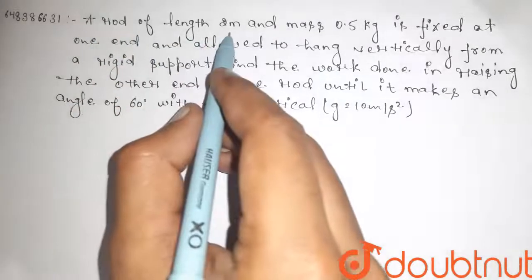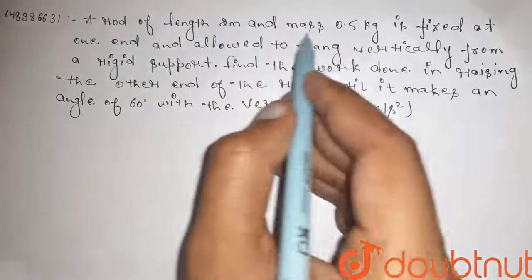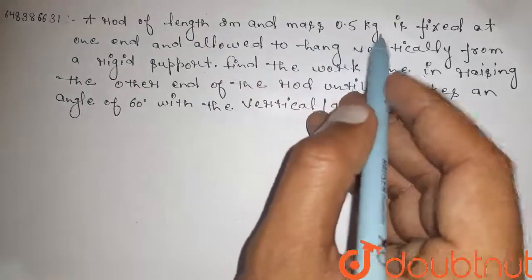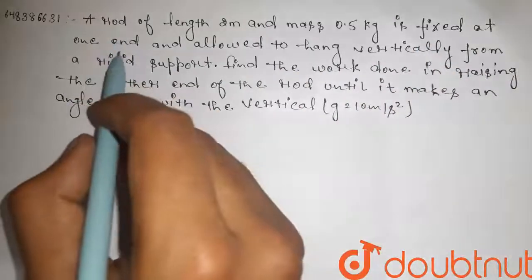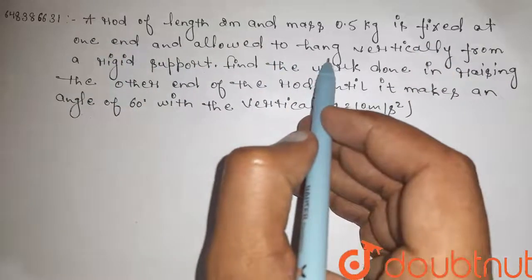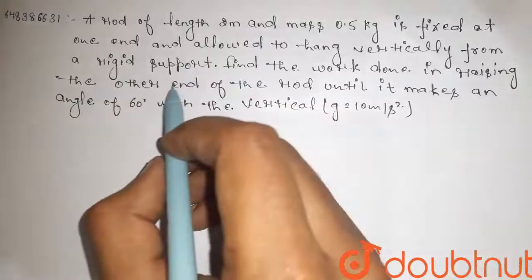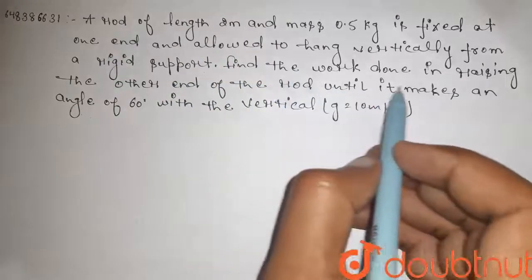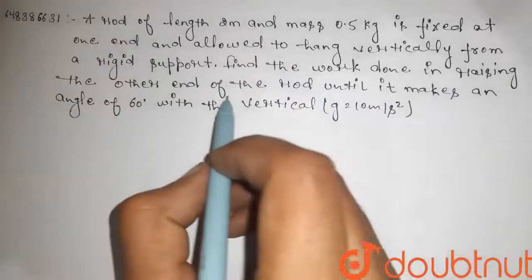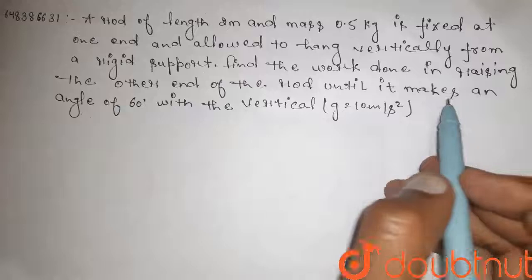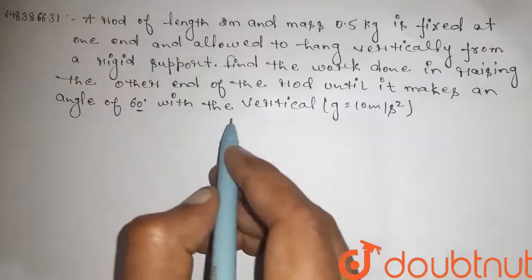A rod of length 2 meters and mass 0.5 kg is fixed at one end and allowed to hang vertically from a rigid support. Find the work done in raising the other end of the rod until it makes an angle of 60 degrees with the vertical.